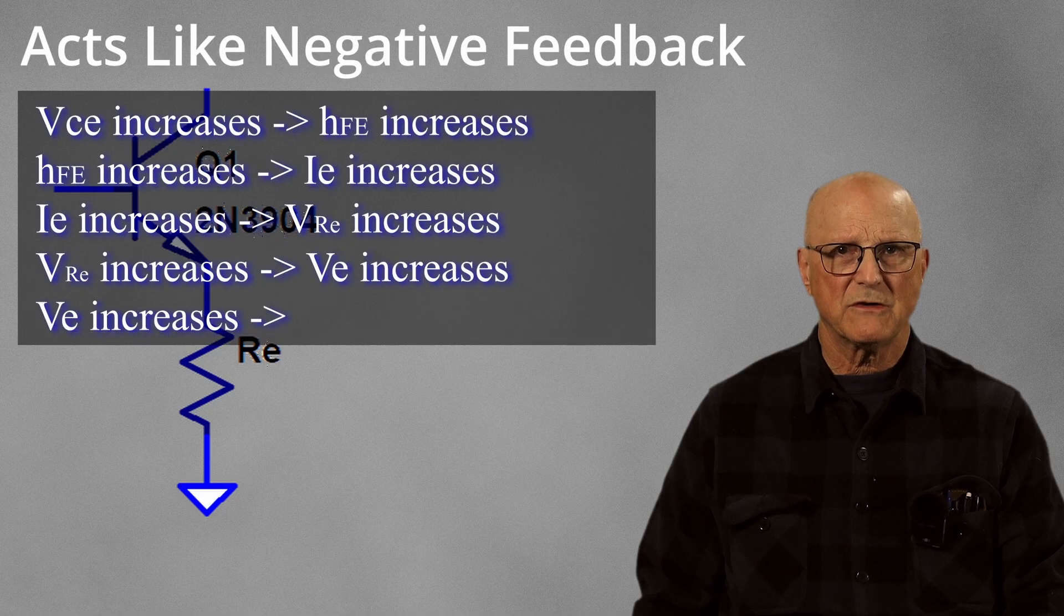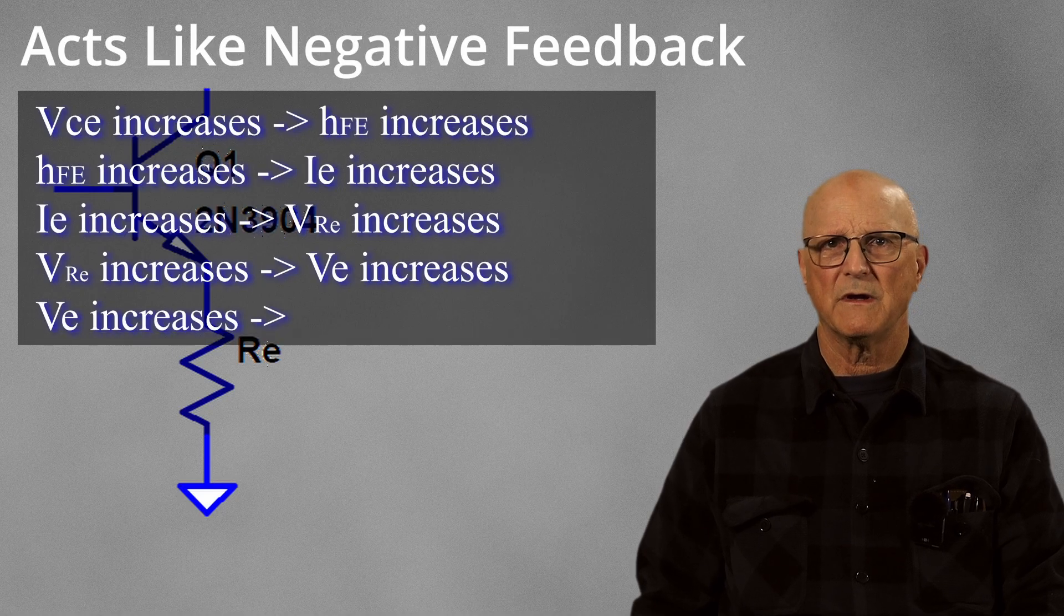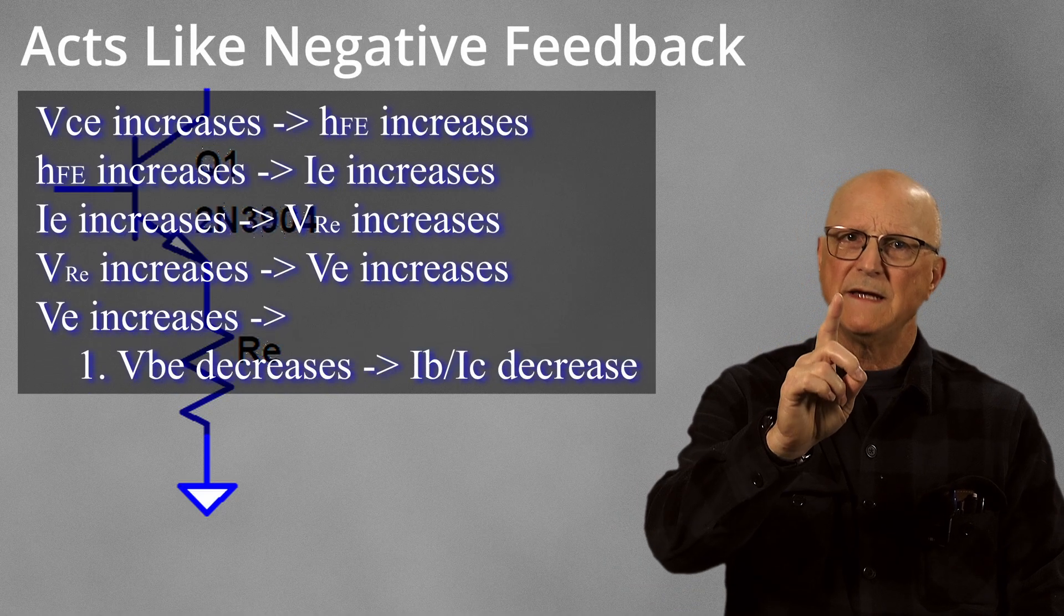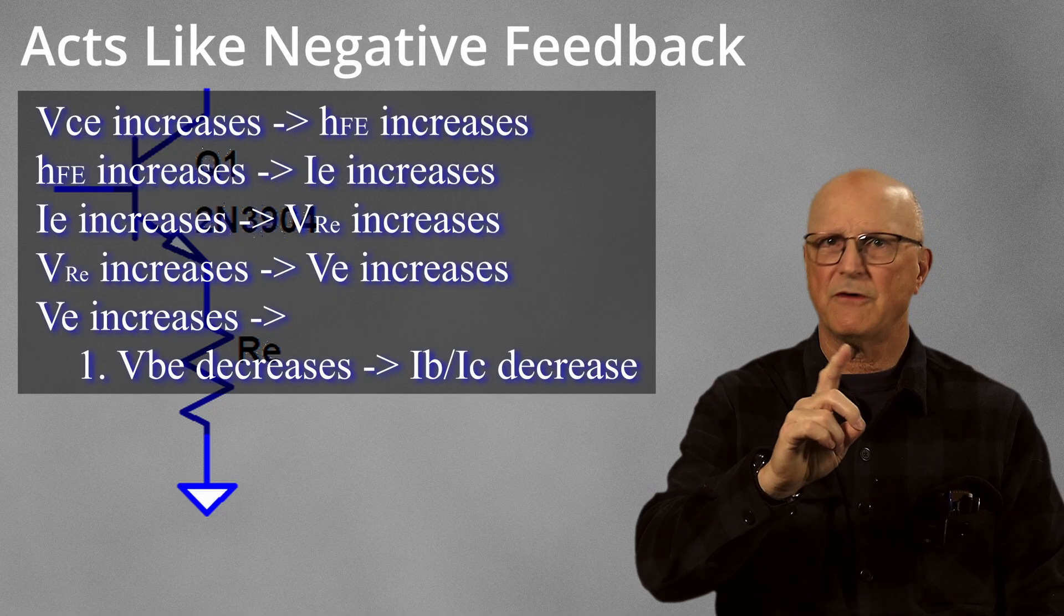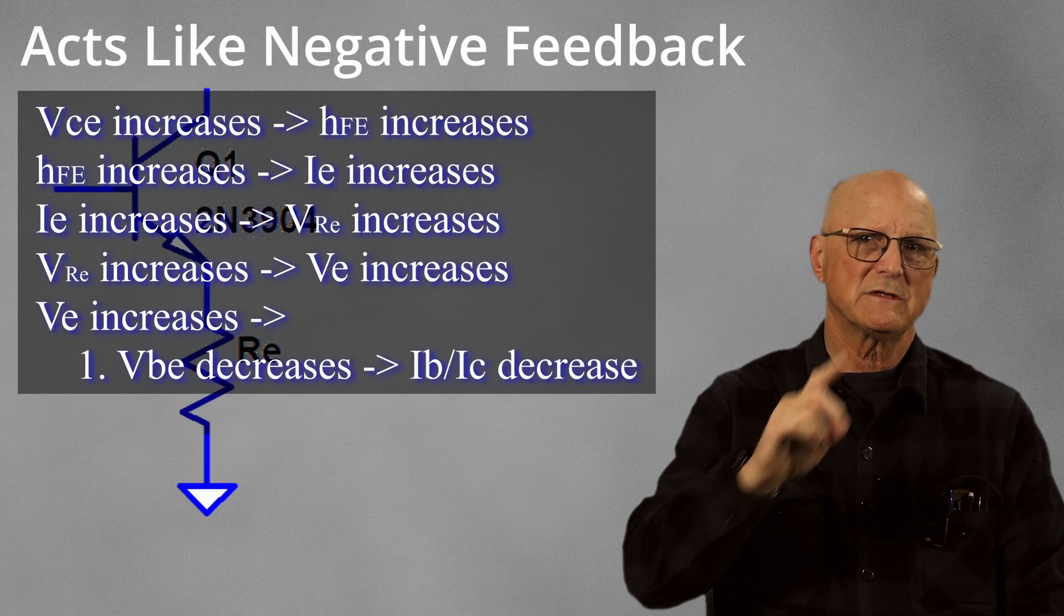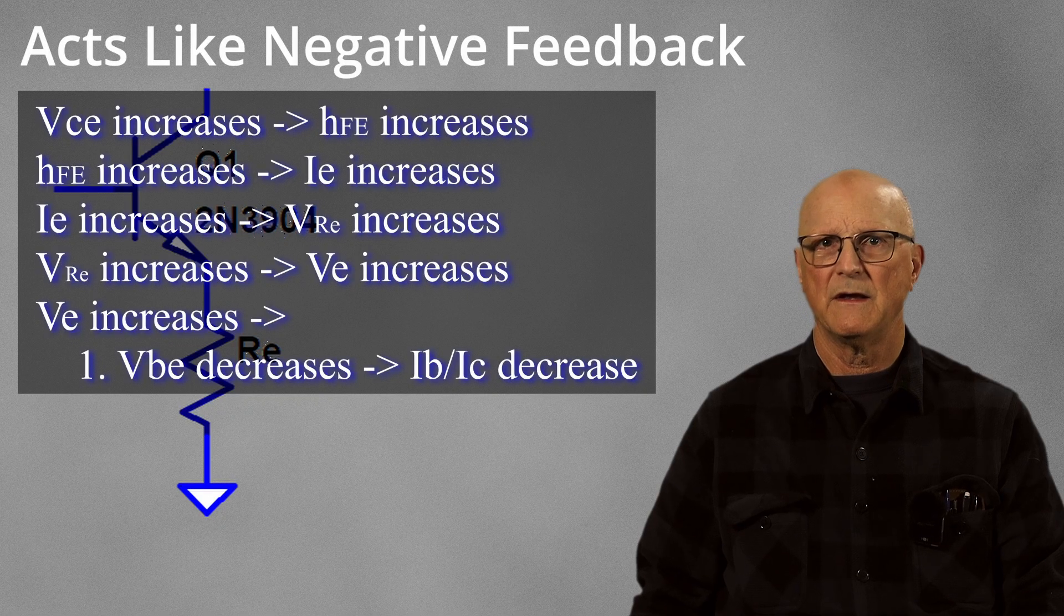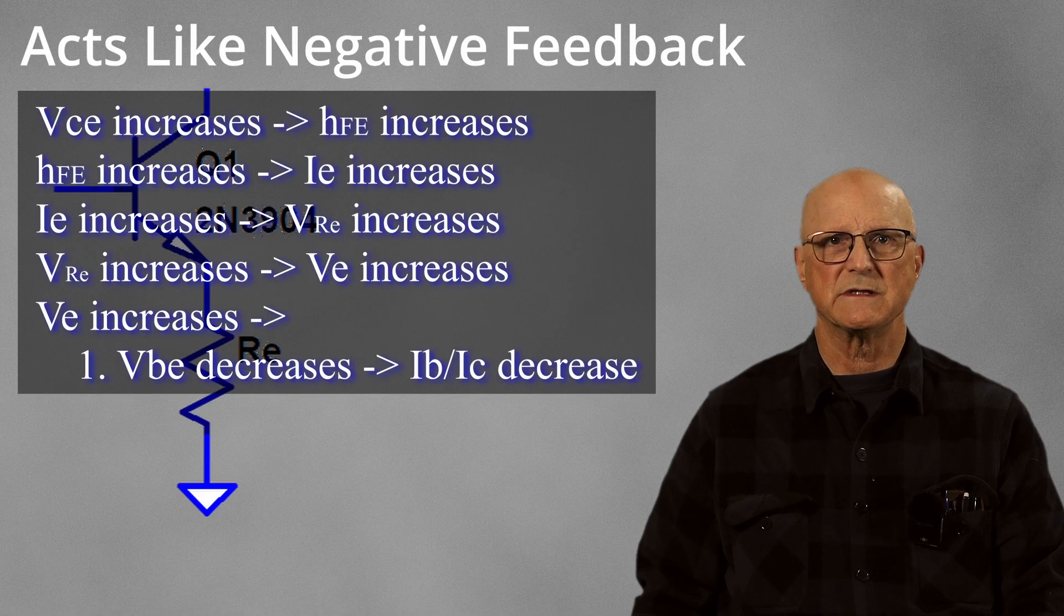When the emitter voltage increases, two things happen. First, the base emitter voltage decreases, which reduces the base current. When the base current decreases, the collector current also decreases.